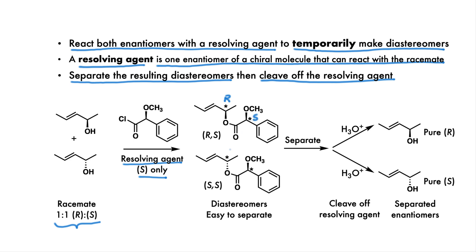You don't know this particular reaction, but assume it works. The resulting compounds are diastereomers of each other — we get the RS and the SS stereoisomers. Diastereomers are fairly different from each other and can usually be easily separated using techniques such as distillation or selective crystallization. We separate the two diastereomers, then cleave off the resolving agent, and we are left with each enantiomer separated and in its pure form.